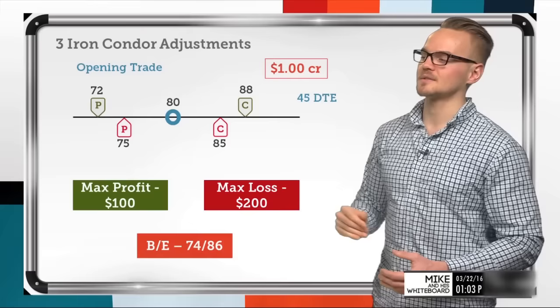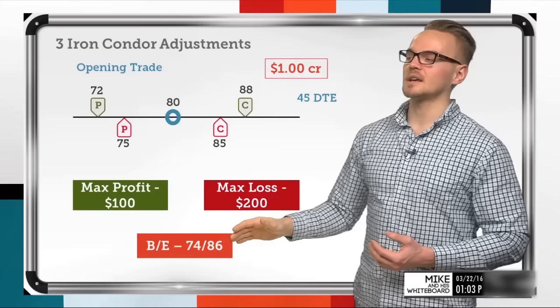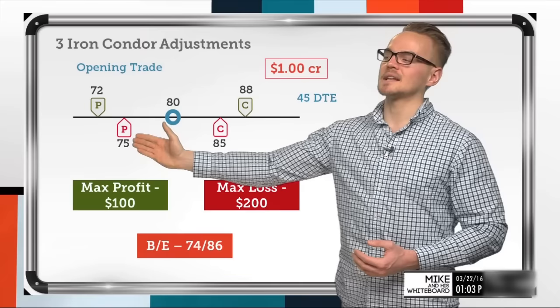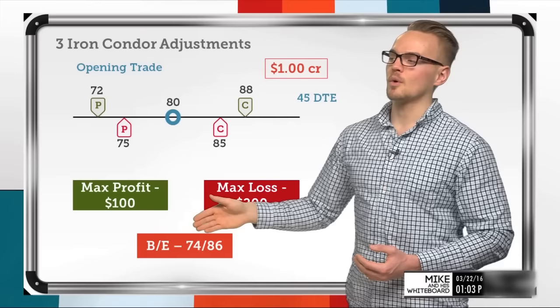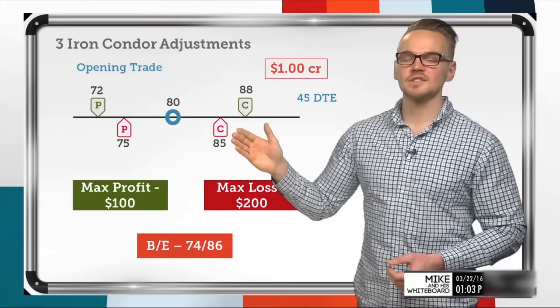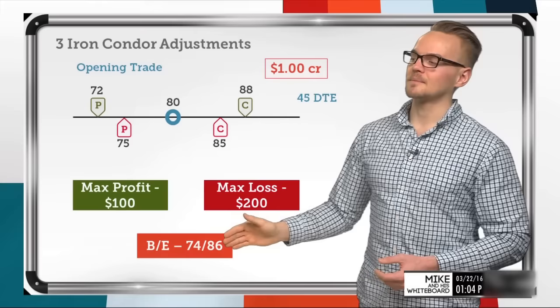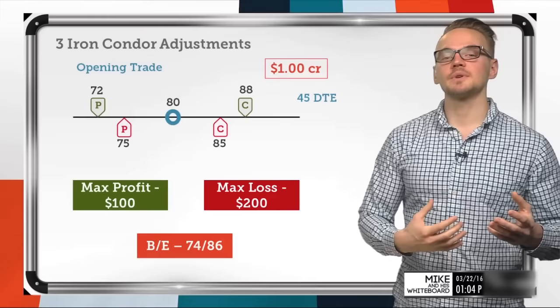Because I collected a dollar, my breakevens are actually a little bit better than the short strikes. I can apply that dollar to the downside as protection, so my downside breakeven is 74. The same applies to the upside — applying that dollar to the short call brings my upside breakeven to 86. Now, what can we do when the trade goes against us? Let's look at what we might do if the stock price goes up.